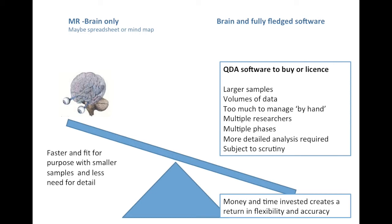But if we move to the right-hand side, where you're doing very much larger projects — and my impression is that for social research, often for political reasons, one needs to have larger samples — there'll be larger volumes of data, probably multiple researchers and multiple phases. It requires much more detailed analysis and is subject to scrutiny. This could still be market research; it's generally about the size and complexity of the project.